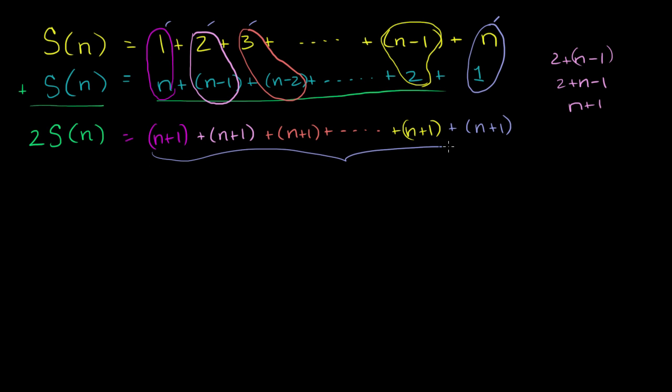So you have n n plus 1's. So if you add something to itself n times, or if you have something n times right over here, this is really just, this is exactly equivalent to n times n plus 1. So 2 times that sum, 2 times the sum of all of the positive integers up to and including n is going to be equal to n times n plus 1.